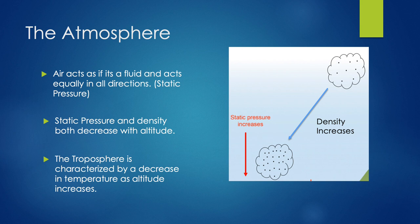As we go up in altitude, both the static pressure and the density of that air mass will decrease. In the troposphere — the lower portion of the atmosphere from the ground up to around 36,000 feet where the tropopause is — as we go up in altitude we're going to have a drop in temperature, pressure, and air density. Conversely, as an air mass travels towards the ground, density and static pressure will both increase, giving us more air molecules per unit of air.